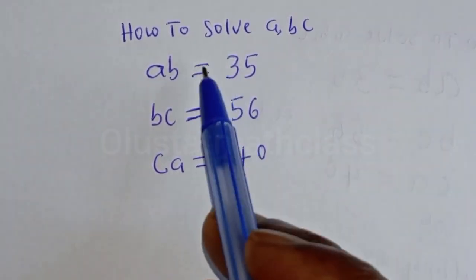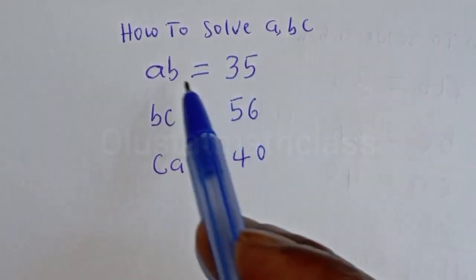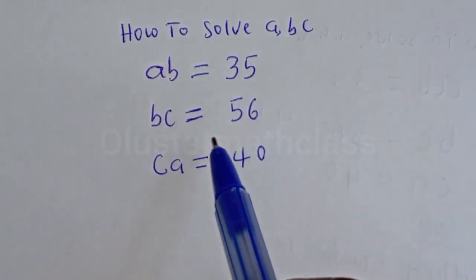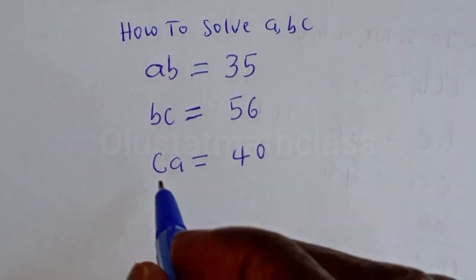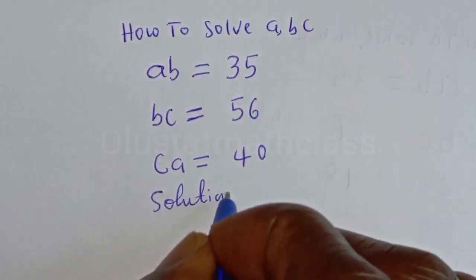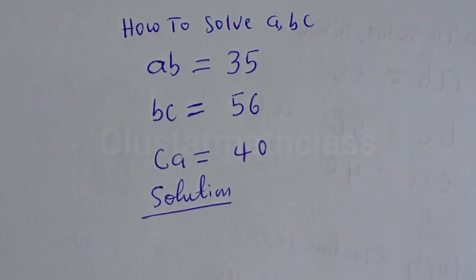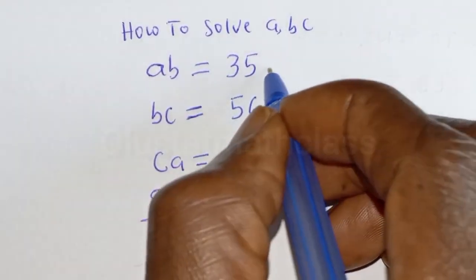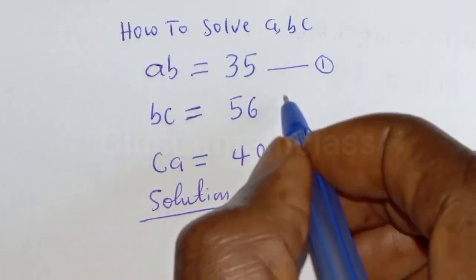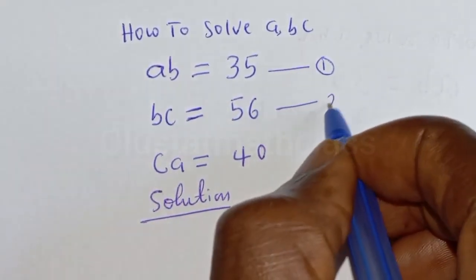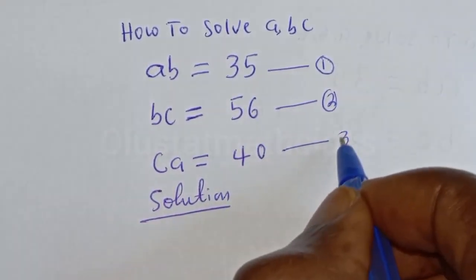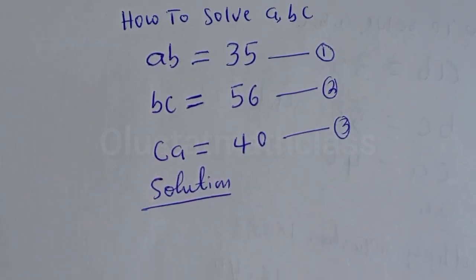Hello. How to solve A, B, C from the given equations: AB is equal to 35 — let's call this equation 1; BC is equal to 56 — let's call this equation 2; and CA is equal to 40 — let's call this equation 3.